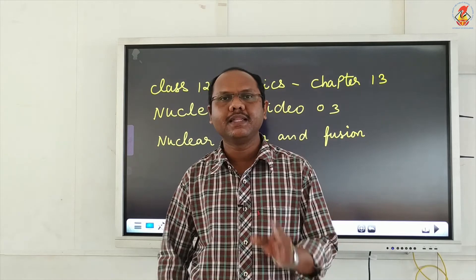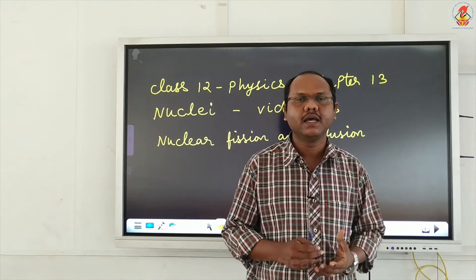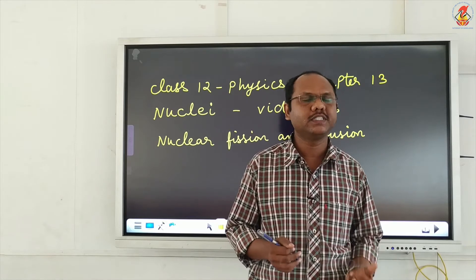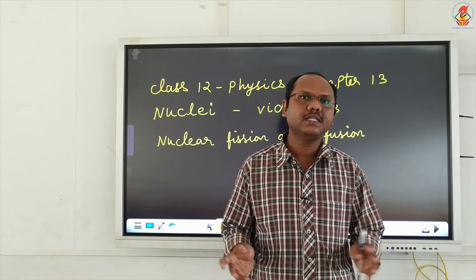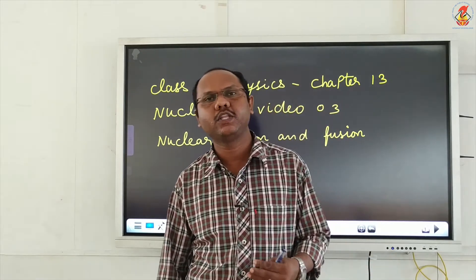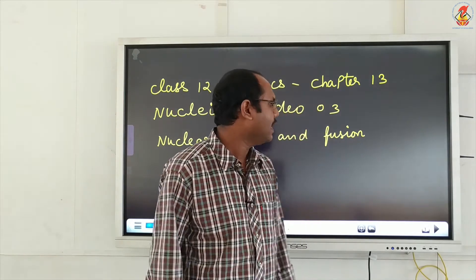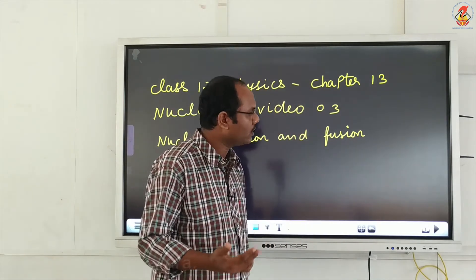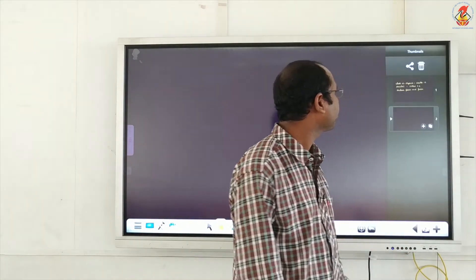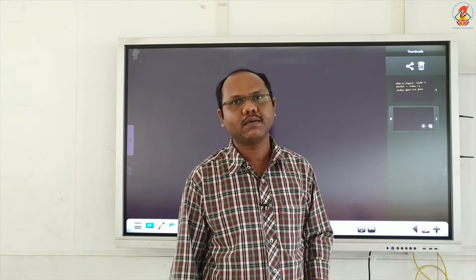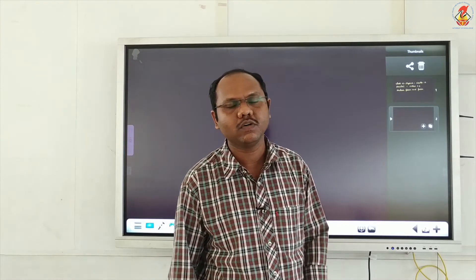Hello students. In this section we are going to study about nuclear fission and fusion. All these reactions like nuclear fission and fusion are related to binding energy. Last class we discussed what is meant by binding energy, and we studied the equation: BE is equal to delta m into c square.